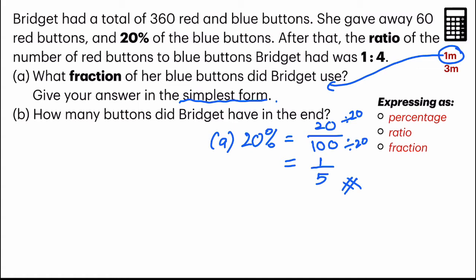Now B. How many buttons did Bridget have in the end? The ratio given to us for red buttons to blue buttons was 1 to 4. And let's take a look at these blue buttons here. It's 4 units that's after, which is left.